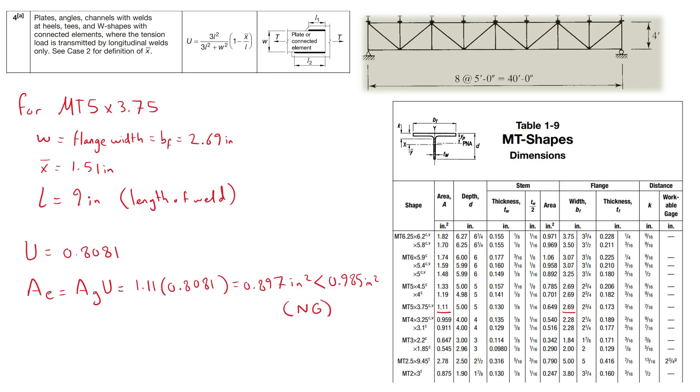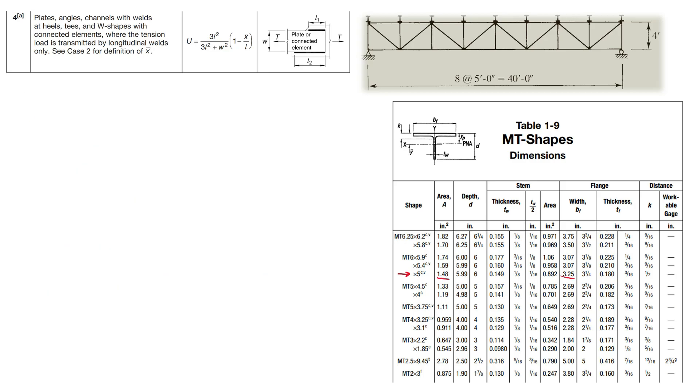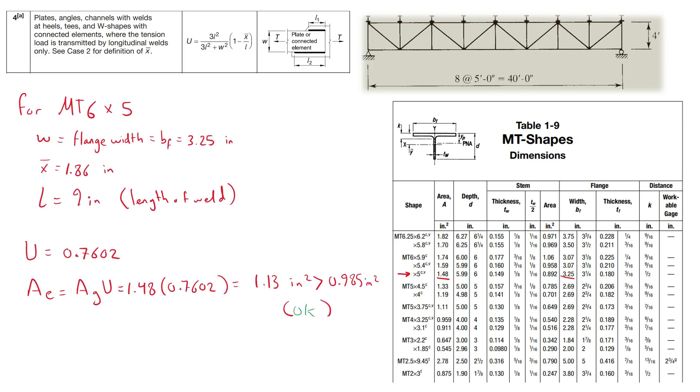And thus we choose a bigger section, so let's try MT6 by 5. The shear lag factor U is then 0.7602. This gives us an effective area of 1.13 which is larger than the required effective area of 0.985 and thus it's okay. Also, the slenderness of the bottom chord is fine considering that it is braced at the panel points.